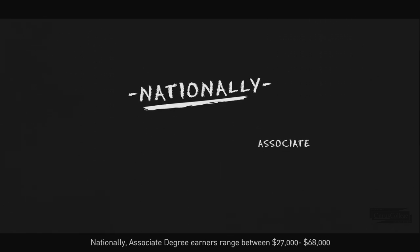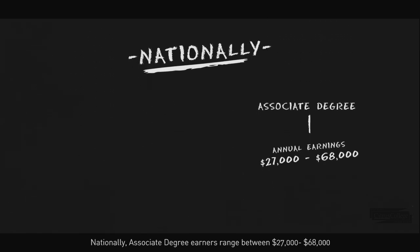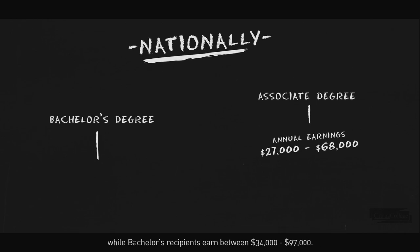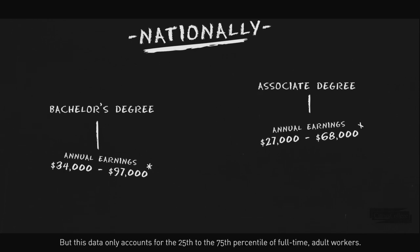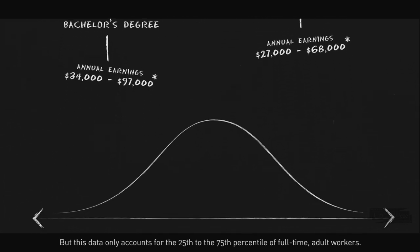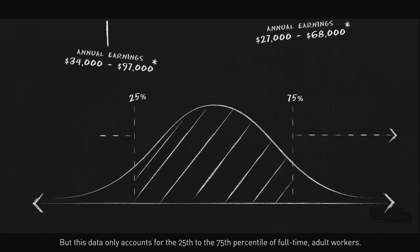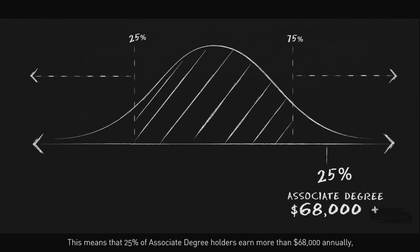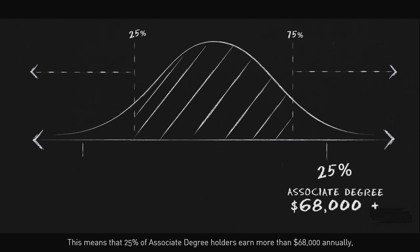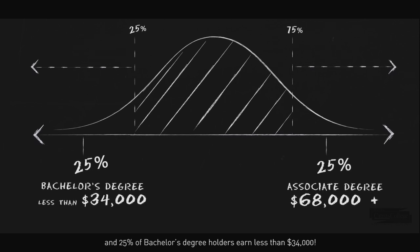Nationally, associate degree earners range between $27,000 and $68,000, while bachelor's recipients earn between $34,000 and $97,000. But this data only accounts for the 25th to the 75th percentile of full-time adult workers. This means that 25% of associate degree holders earn more than $68,000 annually, and 25% of bachelor's degree holders earn less than $34,000.